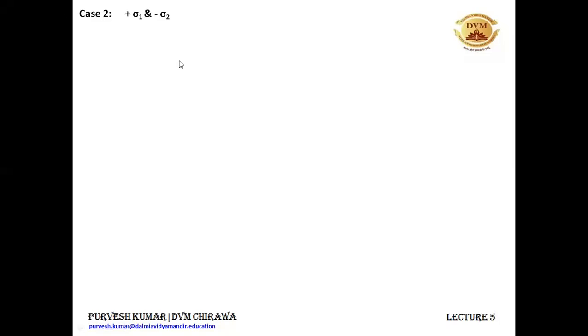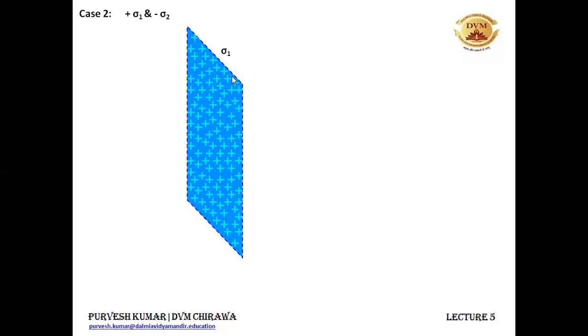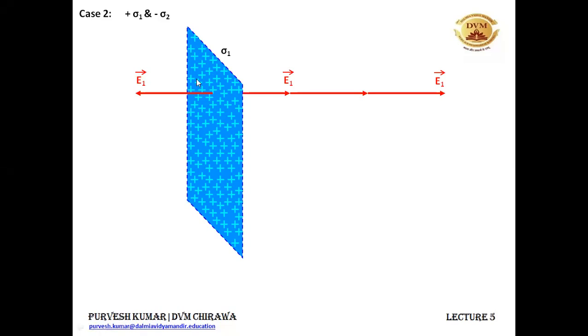The first sheet is negatively charged with surface charge density sigma 2. This is the positively charged sheet with surface charge density sigma 1. The electric field lines from this sheet will be pointing outwards from the sheet. This will be the direction of the electric field and you can mark it as E1. E1 is the electric field due to the positively charged sheet and it is outwards.